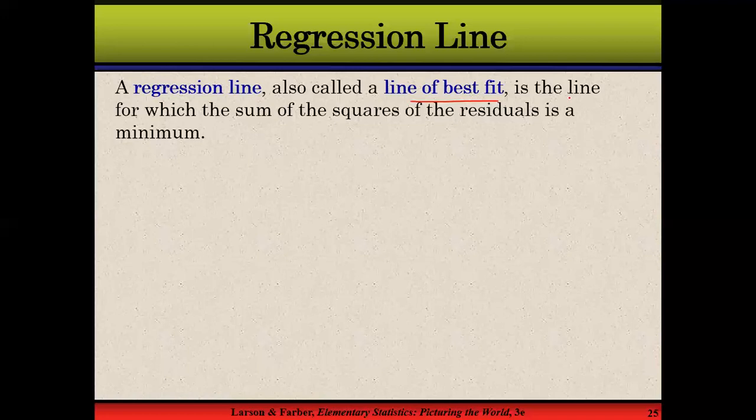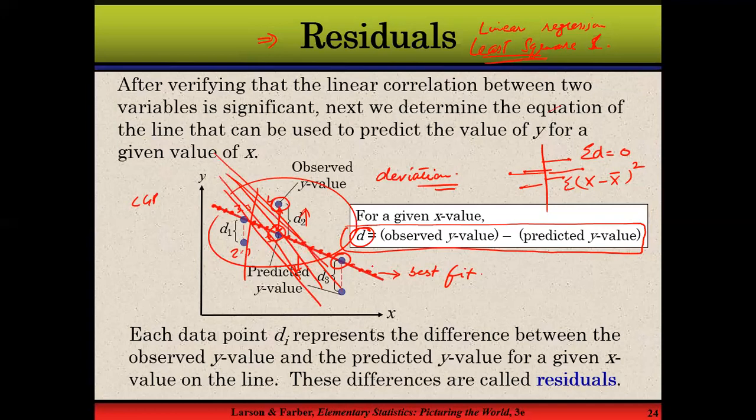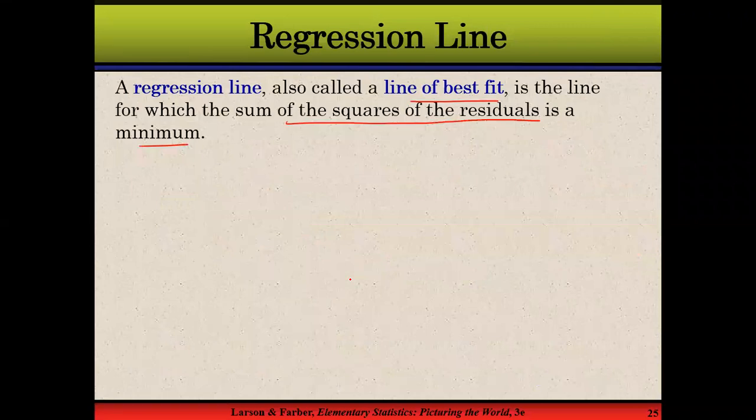And it's a line for which the sum of squares of the residuals is minimum. For example, I can draw infinite number of diagonal lines here. None of them would be a line of best fit. Only one single line would be called the line of best fit. The reason would be because it will show the least deviations. So this is what we find out when we run regression analysis.